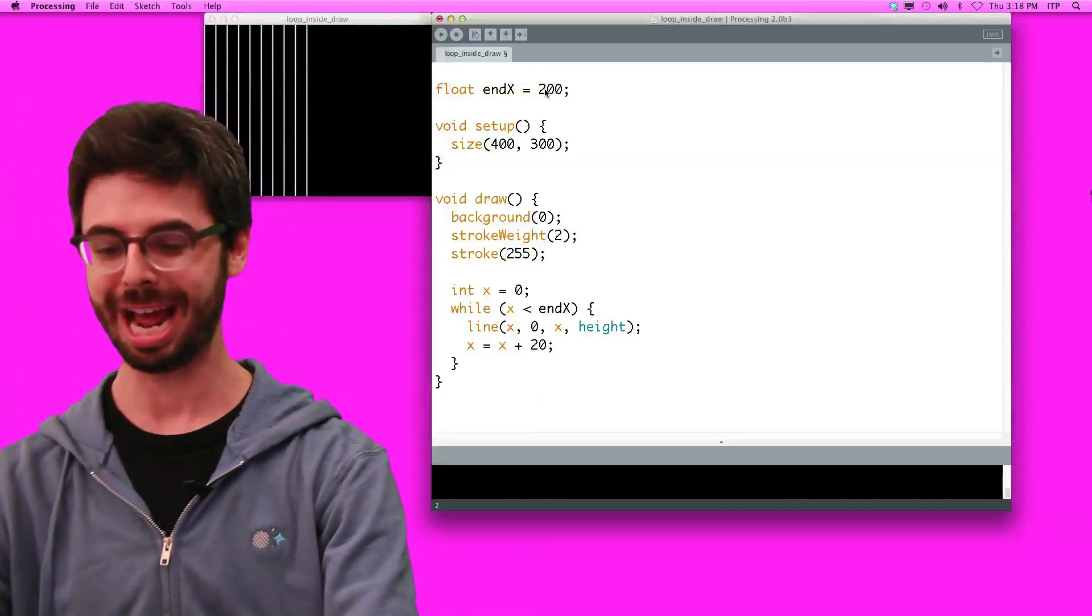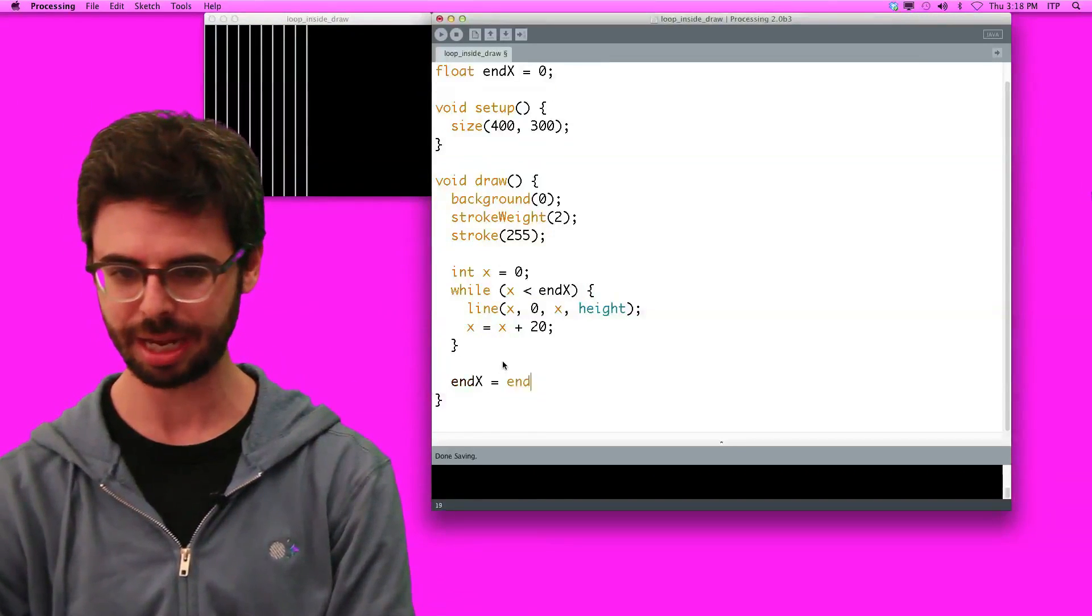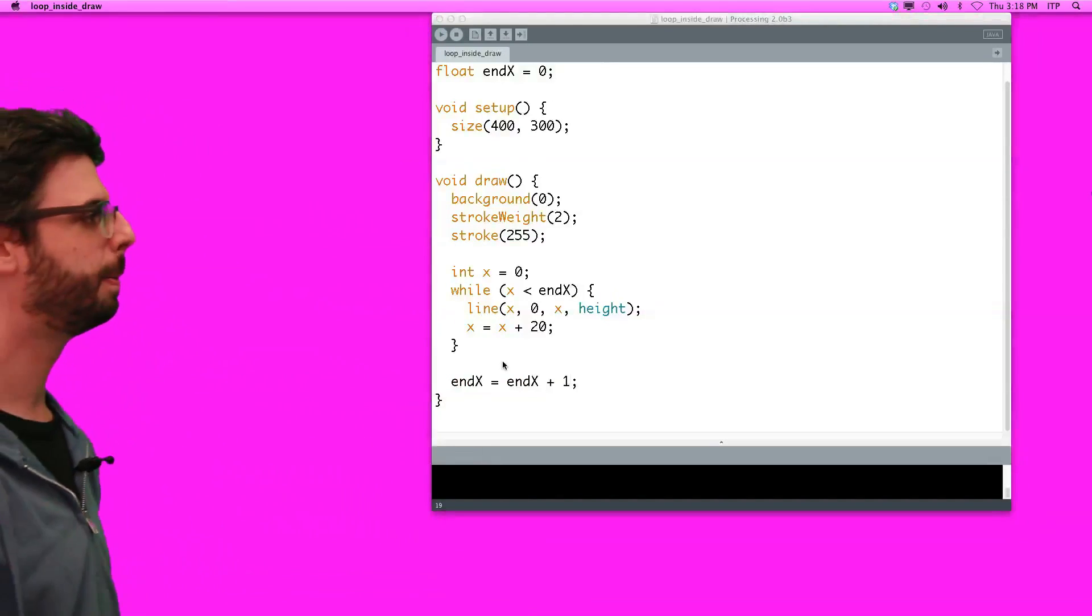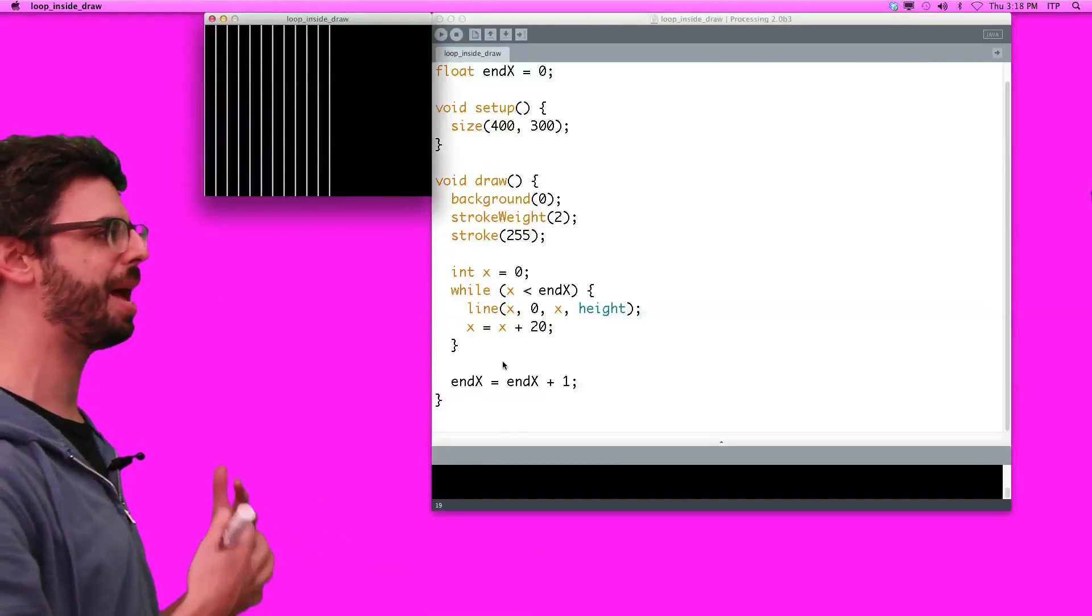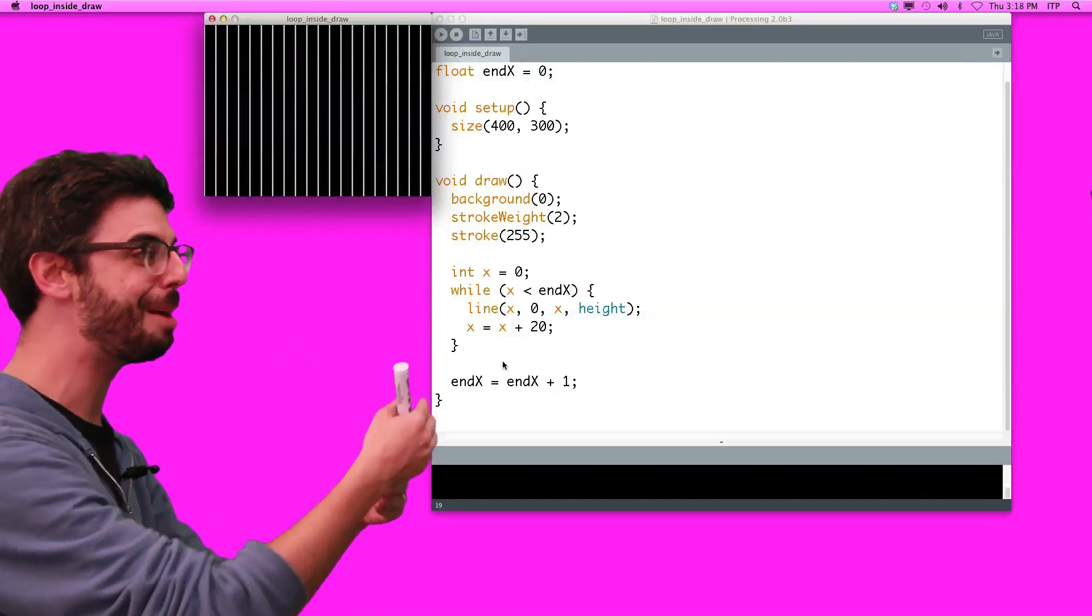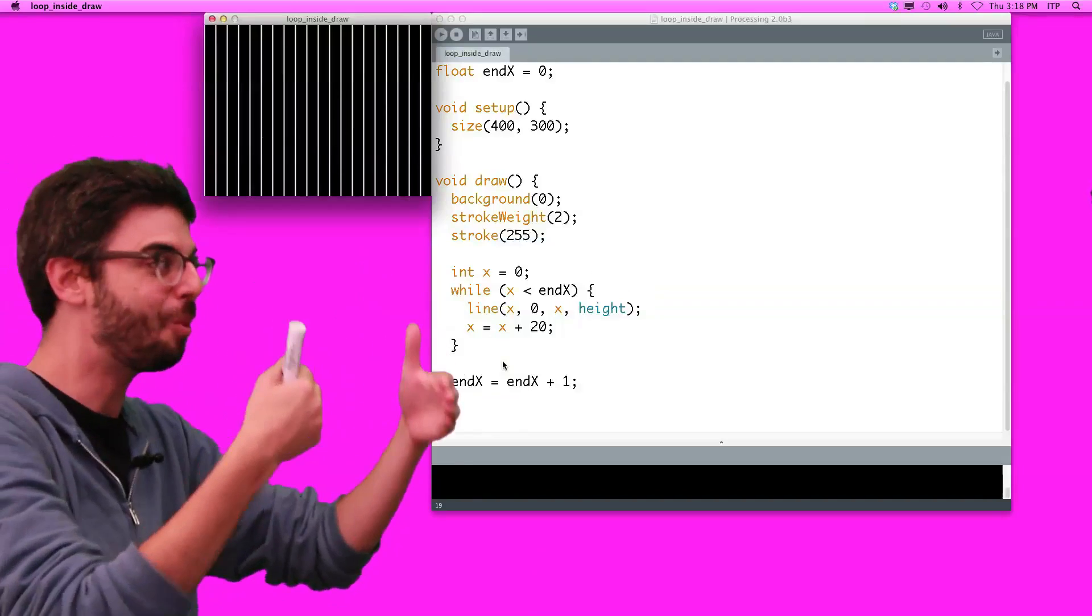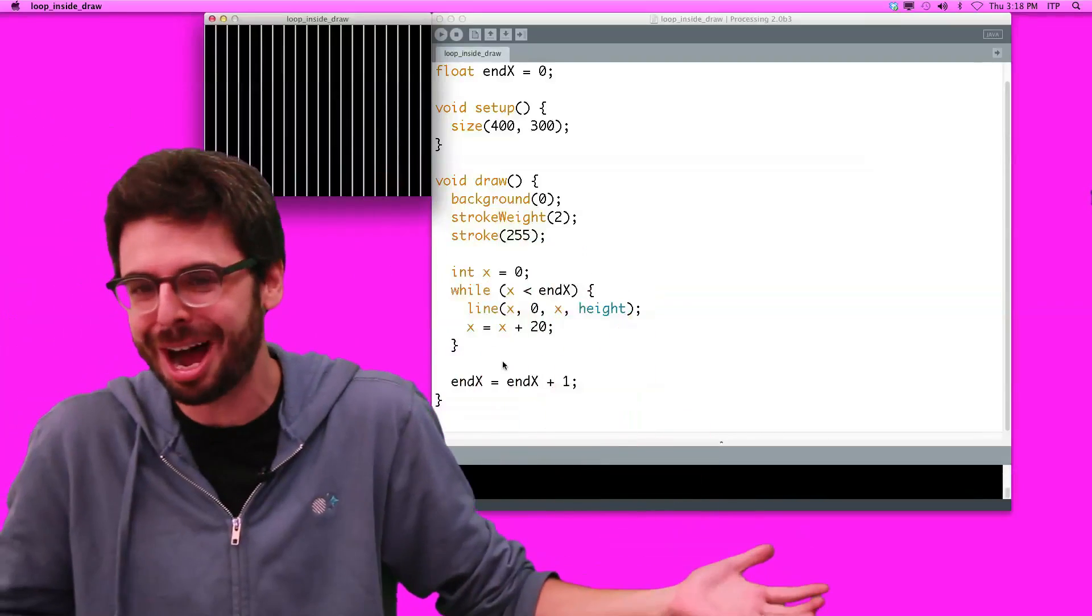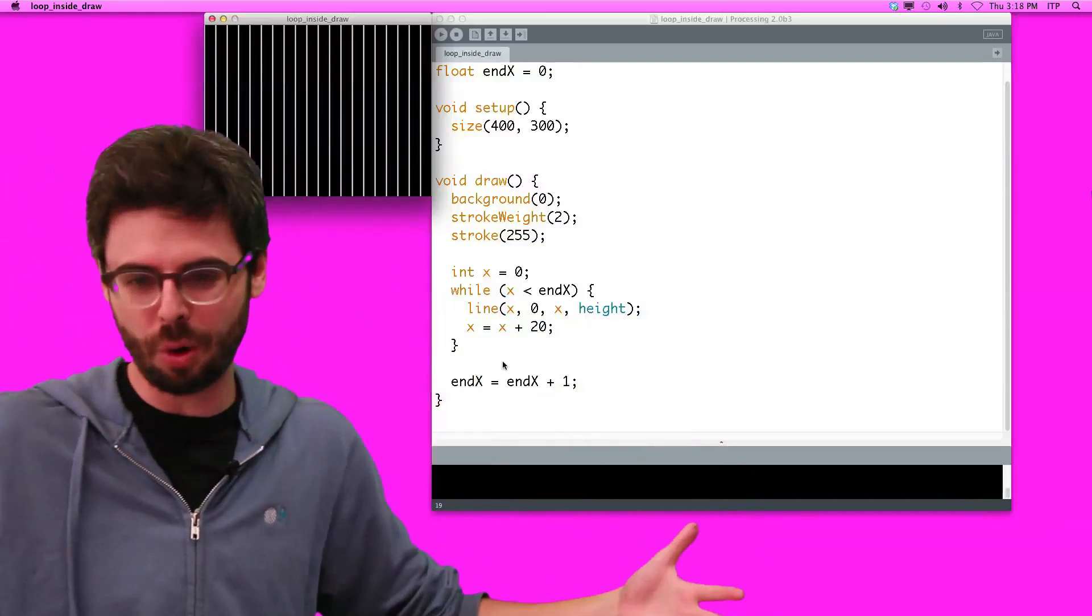I could just say, hey, end x equals end x plus one. And now when I run this, we see, you know, what is the value of end x? It's going up and up every frame. So it's giving us the appearance of that loop doing it one at a time, but actually we're doing the loop each time. We're just doing some of the loop, then more of the loop, then more of the loop, then more of the loop. But the whole loop is a smaller portion, then a larger portion, then a larger portion of the whole window.